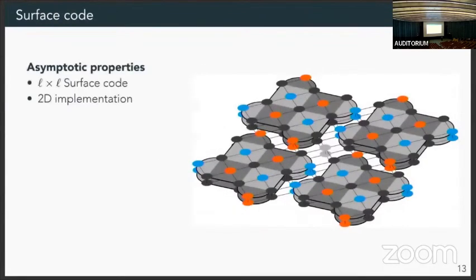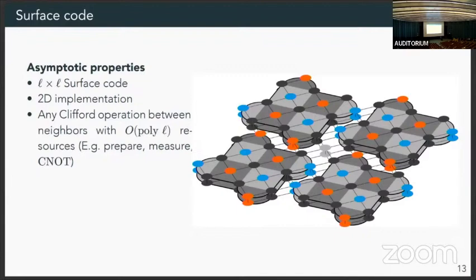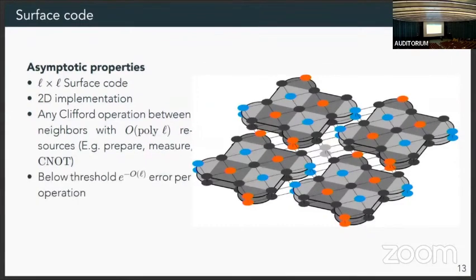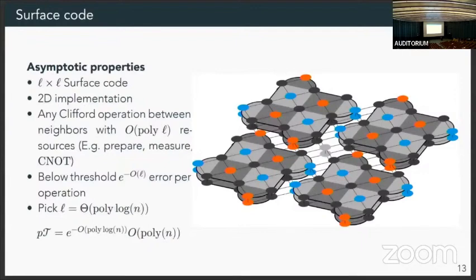So just for the surface code, you have an L by L surface code. This has a 2D implementation. And the only thing you really need to know is that we can do Clifford operations with polynomial resources. So we can prepare, we can measure, we can do our CNOT, these sorts of things. And then below the threshold, we have this exponential suppression in this parameter. So all we're going to do is pick the side length of this thing to be polylog. You recall this expression here, the error rate per syndrome extraction cycle of the inner code times the depth. And this can be made, if we pick the surface code size appropriately, this can be made an arbitrarily small constant. So you recover the threshold.